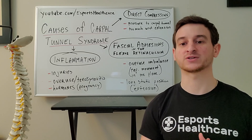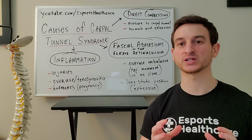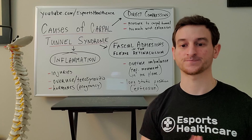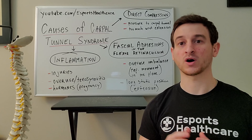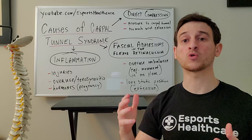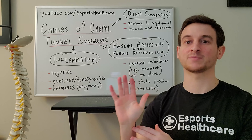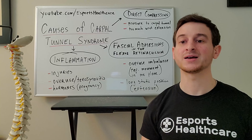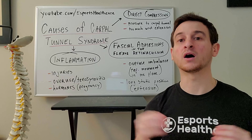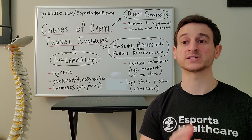Another factor that can lead to carpal tunnel syndrome is the formation of adhesions in the fascia that covers the carpal tunnel. When there are either repetitive motions in one plane or a static position holding the hand and wrist in that position for a long period of time, these are going to cause a tensing and shortening of that band of fascia, which is again going to narrow the space of the tunnel.